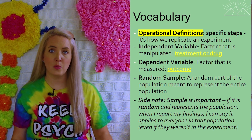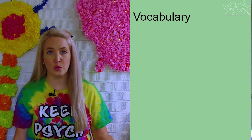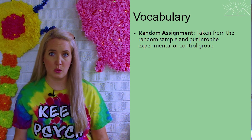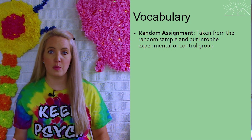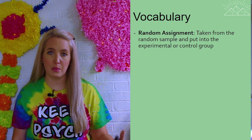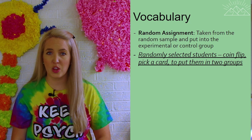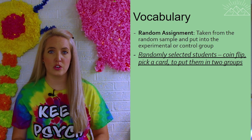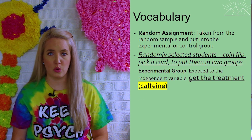Once we have our random sample, we need to decide who's going to receive the caffeine and who isn't, so we can compare the two groups and see whose heart rate is higher. We need to do this randomly as well — this is known as random assignment — which means that everybody in the experiment has an equal chance of being given the independent variable or being put into the control group. We could flip a coin, pick a card, whatever it takes to make sure they have a random chance of ending up in the experimental or the control group.